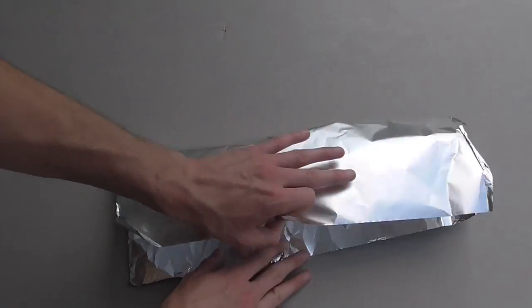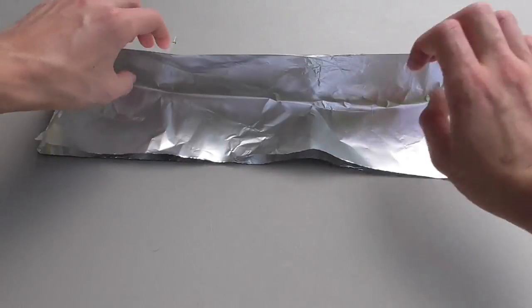First you'll want to cut yourself off a piece of foil that's about 15 or 16 inches long. Fold the foil in half the long way, smooth it out, and then repeat.